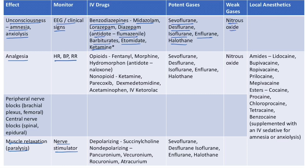For analgesia: intravenous opioids include fentanyl, morphine, and hydromorphone — antidote is naloxone. Non-opioid analgesics include ketamine, parecoxib, dexmedetomidine, acetaminophen, and IV ketorolac. Notably, only ketamine acts as both an analgesic and amnesic drug among IV agents. Inhaled gases that cause analgesia include sevoflurane, desflurane, isoflurane, enflurane, and halothane. Nitrous oxide is a weak gas that can also cause analgesia.